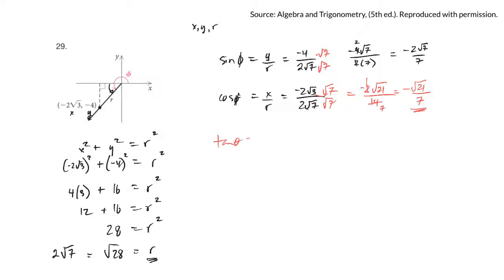And then I'd do the same thing for tan theta and the reciprocals. So the cosecant theta would be the reciprocal of this, 7 over negative 2 root 7. And again, you should rationalize that denominator. Same thing with secant theta is the reciprocal of this, and again, rationalize the denominator.